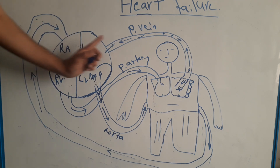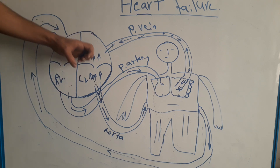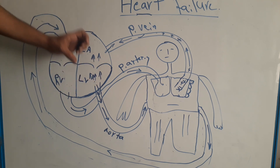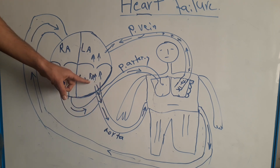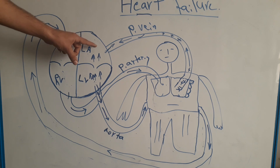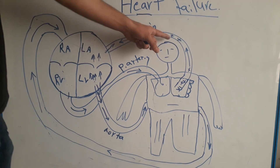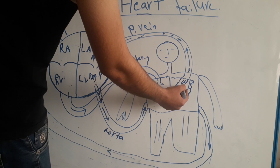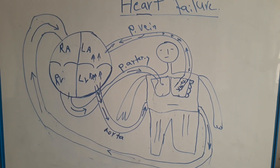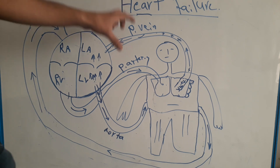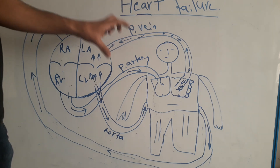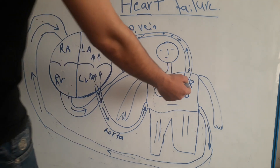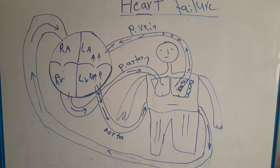In summary, in left heart failure due to ischemia, the left ventricle cannot pump enough blood to the circulation, increasing pressure in the left ventricle, then the left atrium, and increasing hydrostatic pressure in the pulmonary veins, causing fluid to pass into the interstitial space of the lung — pulmonary edema. The patient will present with severe dyspnea because of the large amount of fluid in the lung. Now we will explain what happens in right ventricular failure.